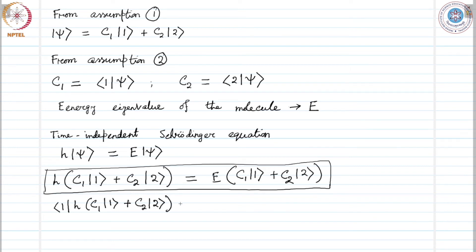So we do one H C1 one plus C2 two, this quantity equals one E C1 one plus C2 two. And for two, this is two H C1 one plus C2 two equals two E C1 one plus C2 two. This is what we have.